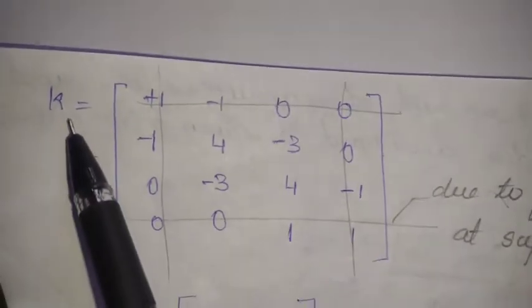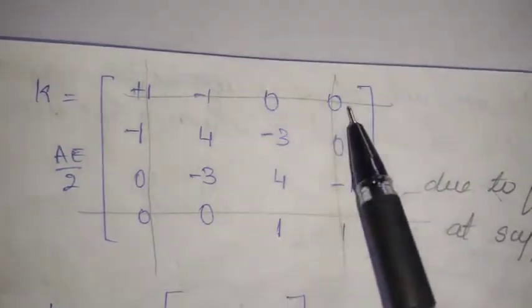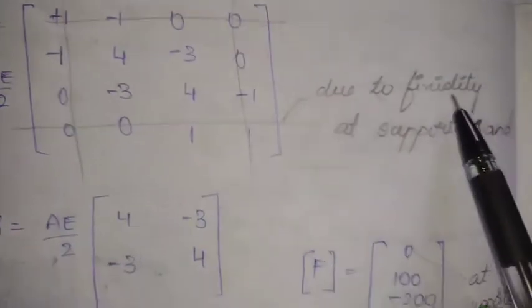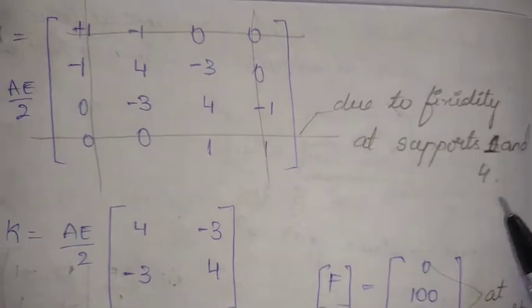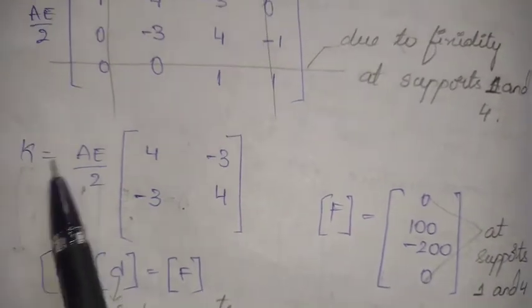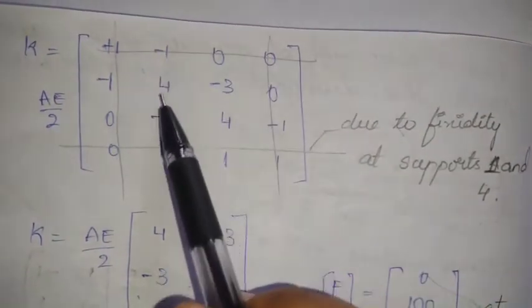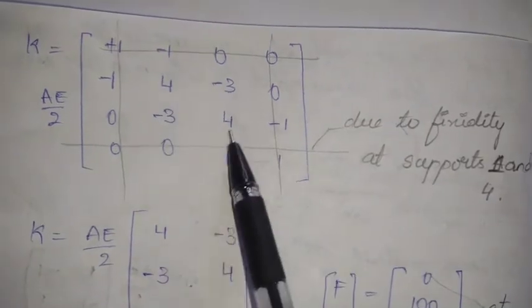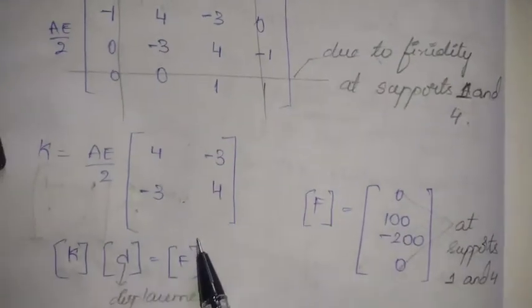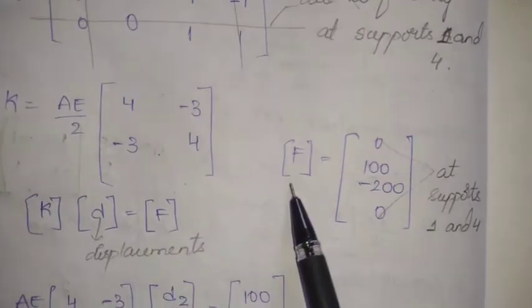Due to the fixity at supports 1 and 4, we eliminate the rows and columns corresponding to nodes 1 and 4 from the global stiffness matrix. After eliminating, only the second and third elements remain in the reduced stiffness matrix, giving us (AE/2) times the 2×2 sub-matrix for nodes 2 and 3.